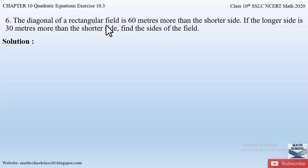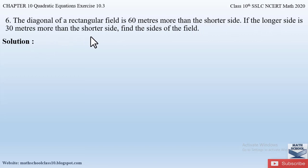The diagonal of a rectangular field is 60 meters more than the shorter side. If the longer side is 30 meters more than the shorter side, find the sides of the field. So first of all let us understand the question.